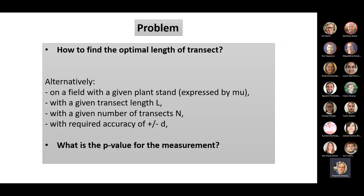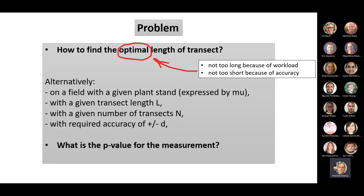The problem is to find the optimal length of the transect — the stick. What does optimal mean? Not too long because of workload, and not too short because we have requirements for precision. For example, we want to detect small differences between two treatments. There's also the question of the relationship between transect length, the number of transects we need at the required accuracy, and the p-value for the measurement. The mu — the mean on the field — is a constant for us.